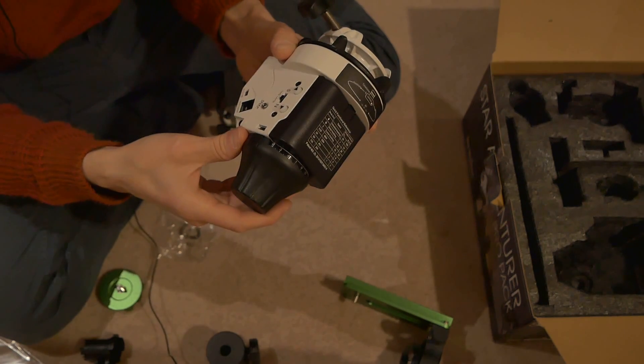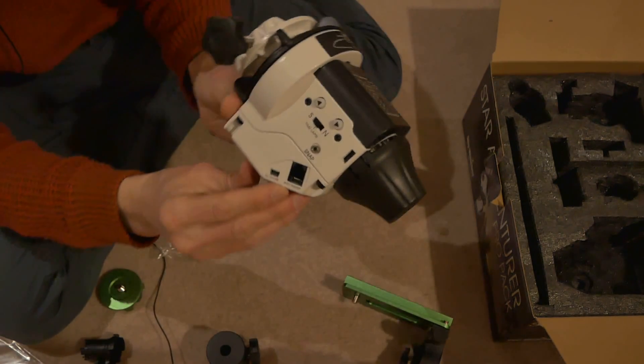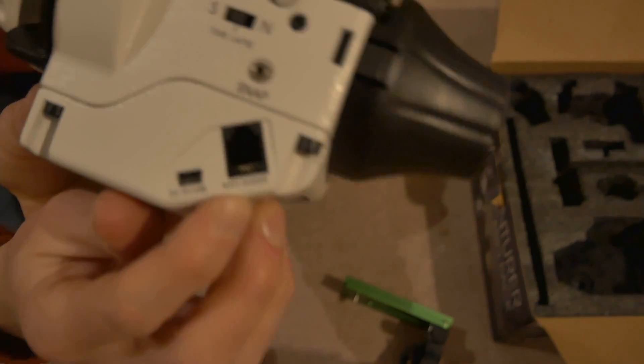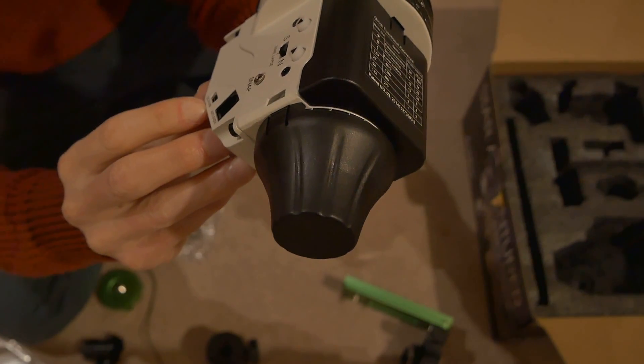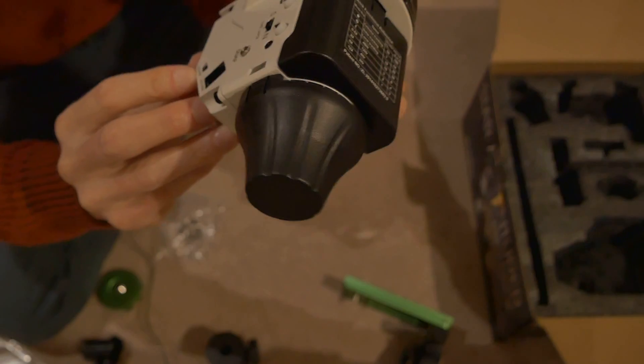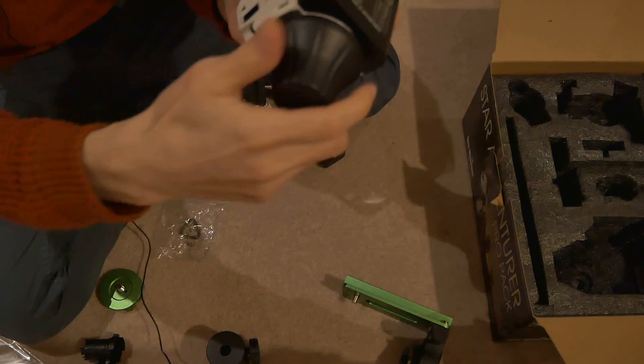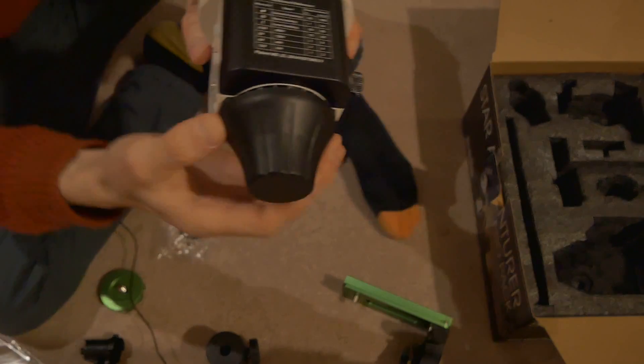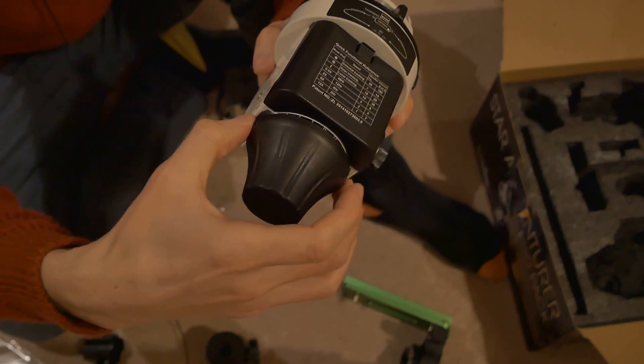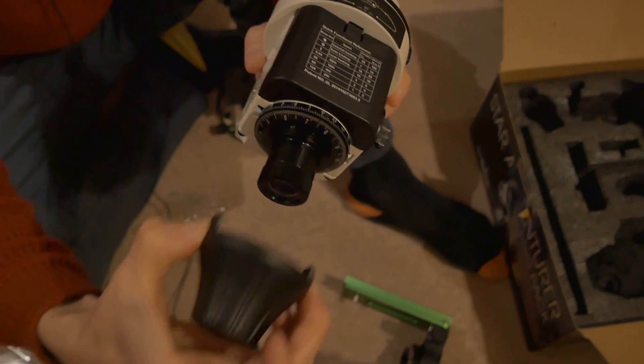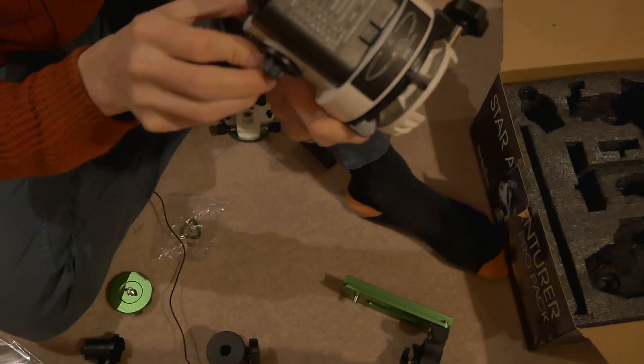It's got an auto guider port there and a USB 5 volt USB - I'm not quite sure what that's for. The polar scope illuminator, the polar scope cover there - that looks like you just click it in at the sides and pull off.